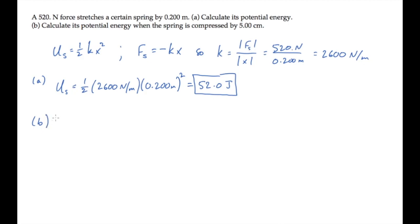In part B, the spring is compressed by a distance of 5 centimeters. The compression gives us a negative value of x, and we calculate 3.25 joules.